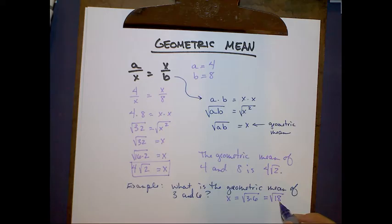Does 18 have a perfect square factor? Absolutely. And then, we get the square root of 9 and we leave the radical in there and we know that the geometric mean is equal to 3 radical 2.